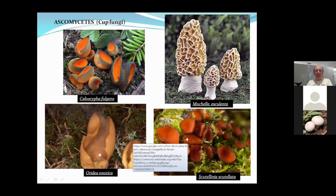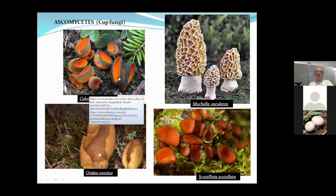Now switching to the Ascomycetes — the cup fungi, where spores are borne in a sac. Common Colorado examples include Caloscypha fulgens, which has an orange interior and gray-green exterior. These grow up by snowbanks, so if you go up around 11,000–12,000 feet in spring and follow the melting snowbanks, you'll find Caloscypha fulgens.